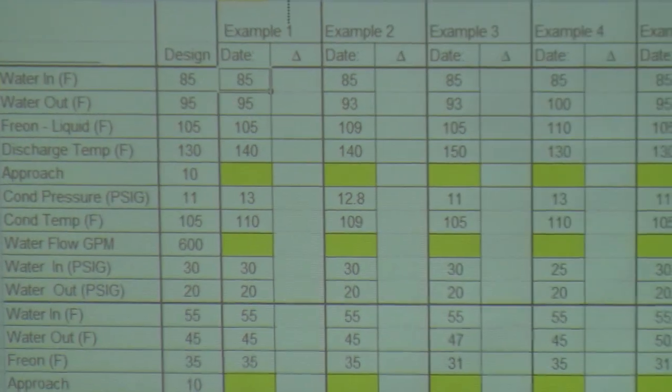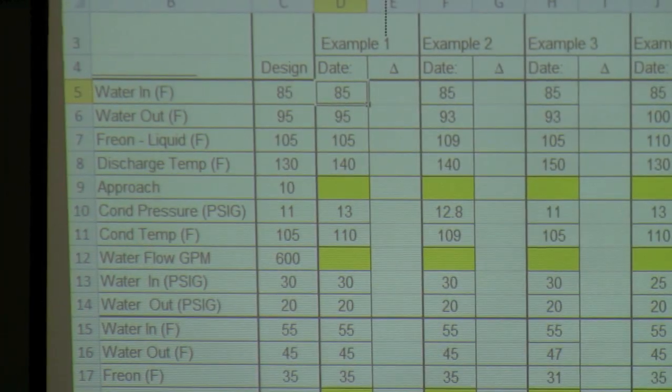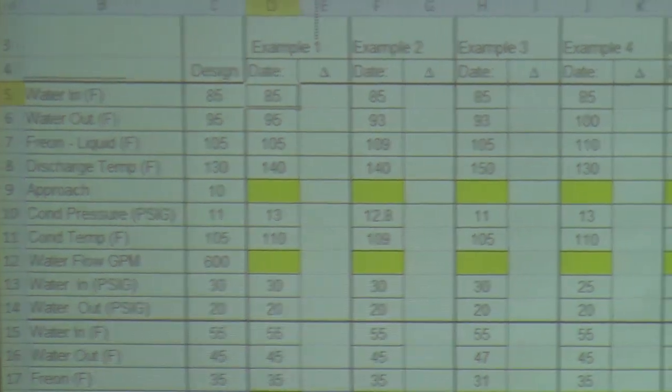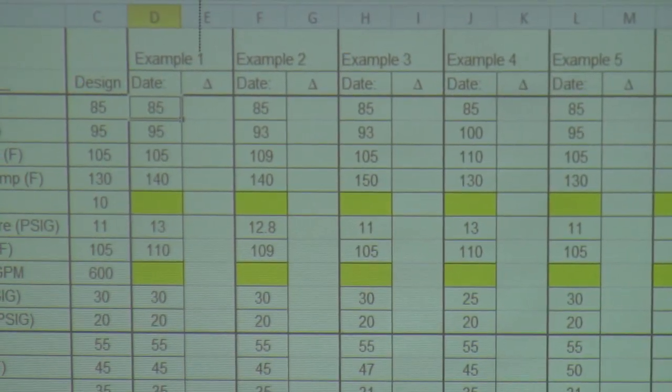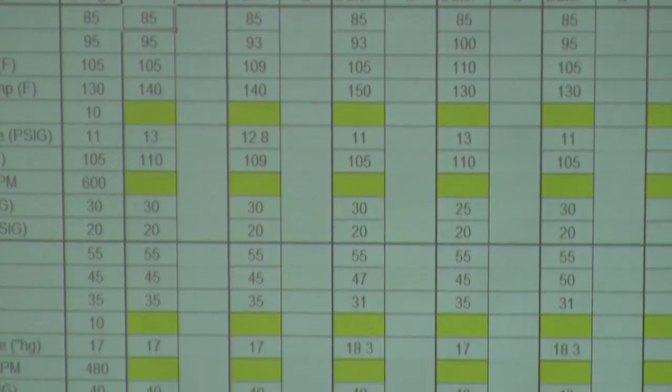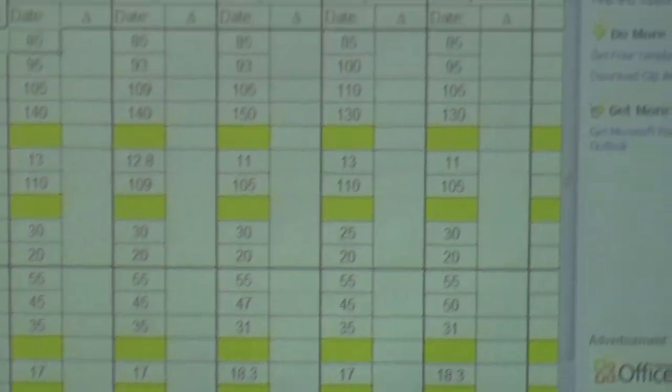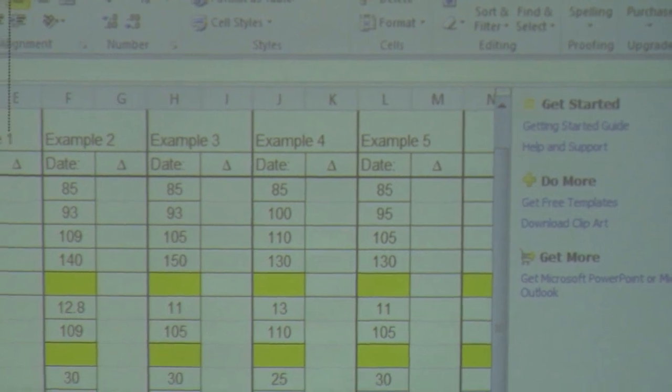You'll notice that I've got data already input. This is some sample chiller logs. We've got ten examples. And each of these examples highlights a problem with a chiller.